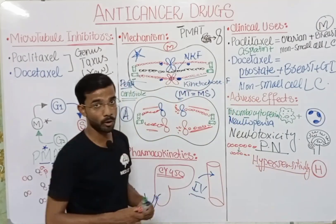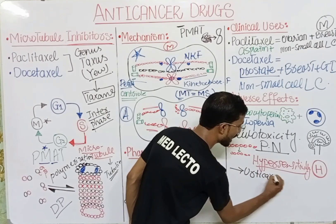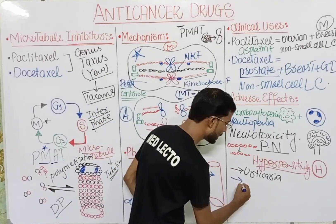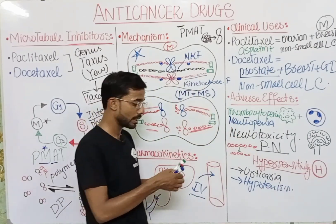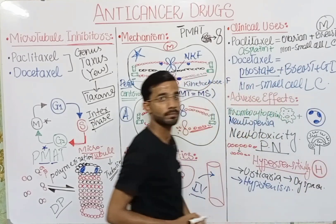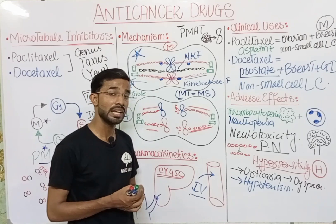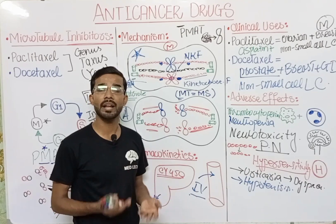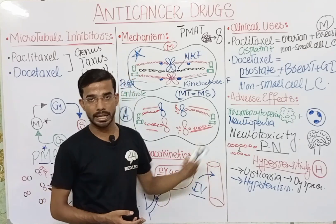Hypersensitivity reactions include three important signs: urticaria, hypotension (low blood pressure), and dyspnea (difficulty in breathing). Additionally, alopecia (hair loss) may occur, along with general symptoms like nausea, vomiting, and diarrhea — these are common adverse effects seen across anti-cancer drugs.